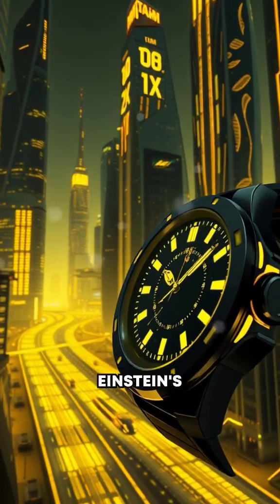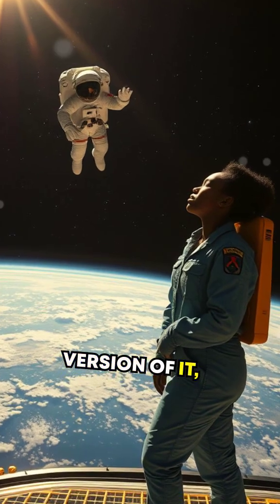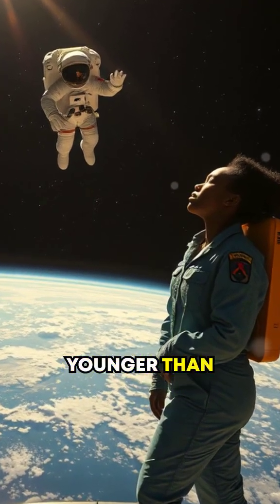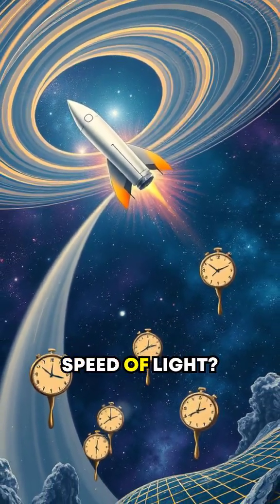Alright, let's break this down. Einstein's theory of relativity. You've probably heard some version of it, like astronauts coming back younger than their earthbound twin. But why exactly does time slow down near the speed of light?